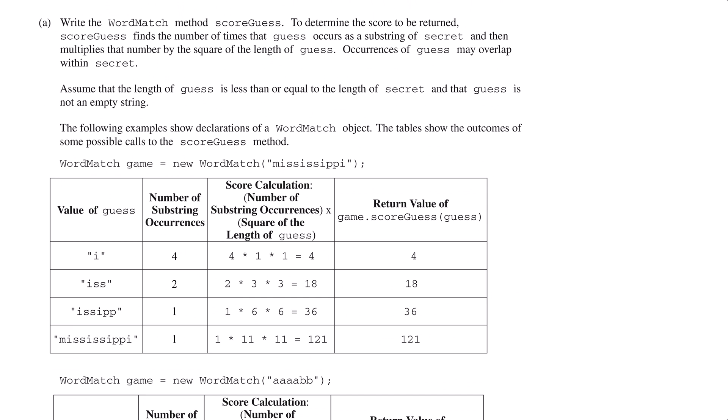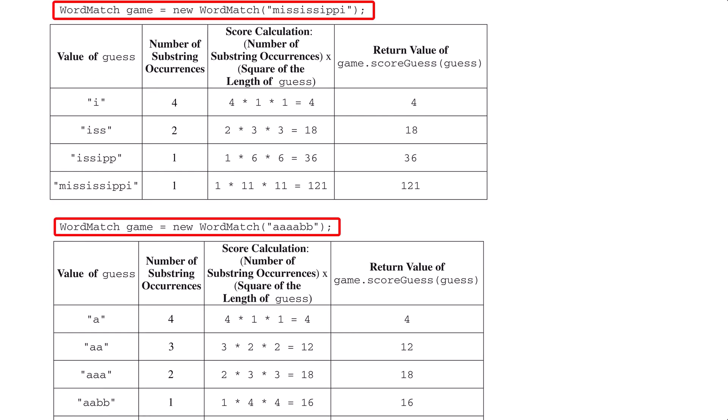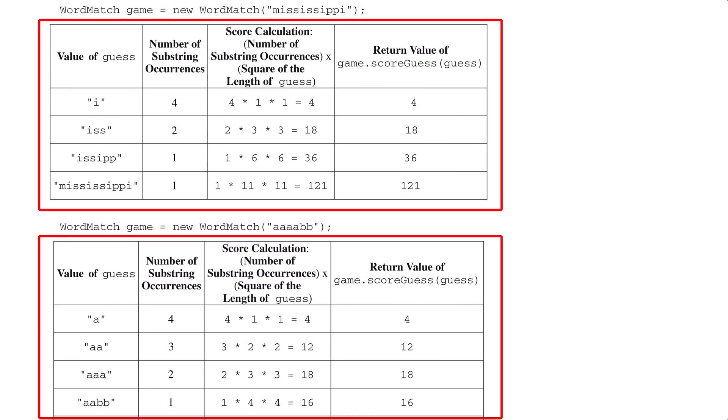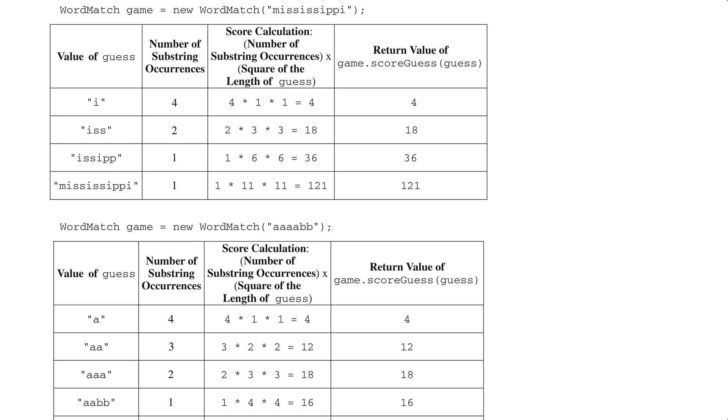Part A gives us an expanded explanation of what the ScoreGuess method should do. First, ScoreGuess counts how many times the guess string appears in the secret string. The score is calculated by multiplying the number of occurrences of the guess by the square of the length of the guess. It gives two examples of creating instances of the WordMatch class, then gives us corresponding tables showing sample calls and what is returned. Examples like these can be critical in understanding APCSA free response questions. This is another good opportunity to pause the video and read through the problem.